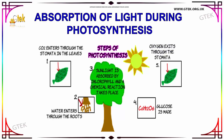Now we will discuss about the steps of photosynthesis. The first step is that CO2 enters through the stomata in the leaves, as you can see here. Then water enters through the roots, which is depicted here. The chlorophyll absorbs sunlight so that the chemical reaction is carried out.